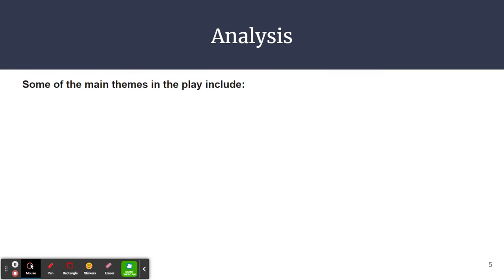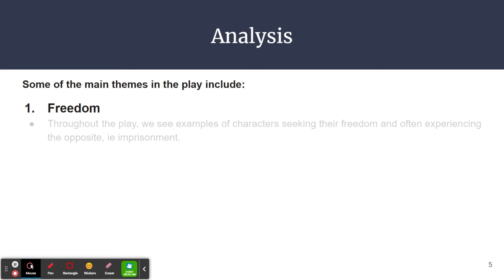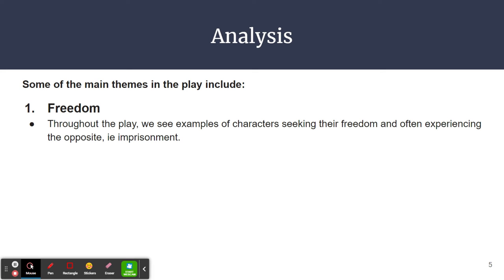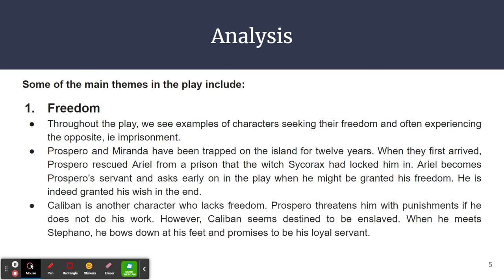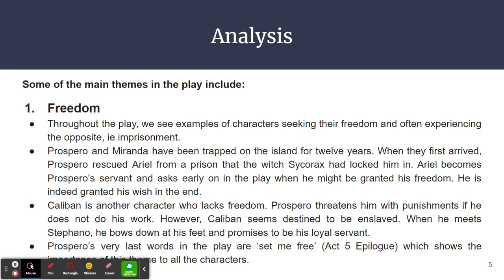Let's have an analysis of this play. Some of the main themes include, firstly, that of freedom. Throughout the play, we see examples of characters seeking their freedom and often experiencing the opposite, that is, imprisonment. Prospero and Miranda, for example, have been trapped on the island for 12 years. When they first arrived, Prospero rescued Ariel from a prison that the witch Sycorax had locked him in. Ariel becomes Prospero's servant and asks early on in the play when he might be granted his freedom, and he is indeed granted his wish in the end. Caliban is another character who lacks freedom. Prospero threatens him with punishments if he does not do his work. However, Caliban seems destined to be enslaved — when he meets Stefano, he bows down at his feet and promises to be his loyal servant. Prospero's very last words in the play are, "Set me free," from Act 5 of the Epilogue, which shows the importance of this theme to the play.